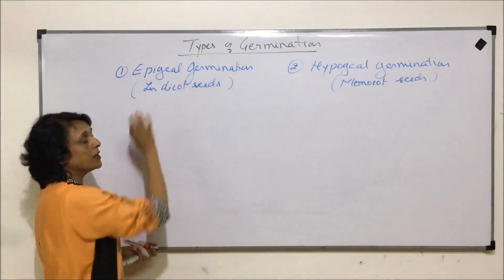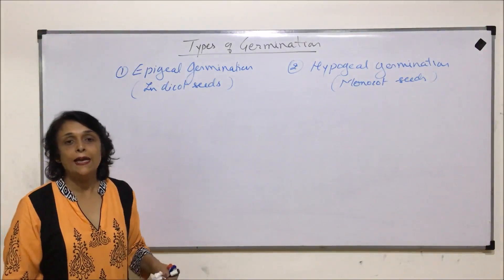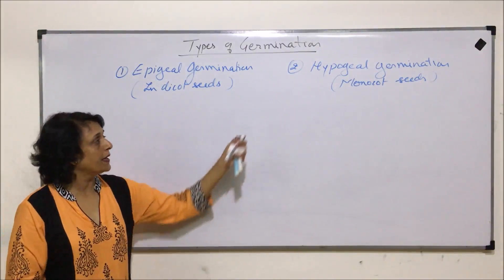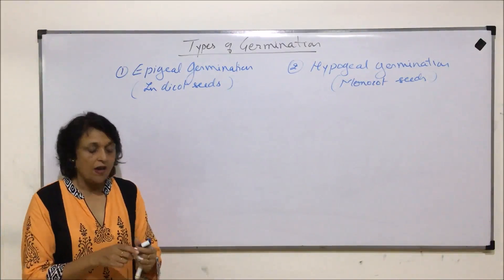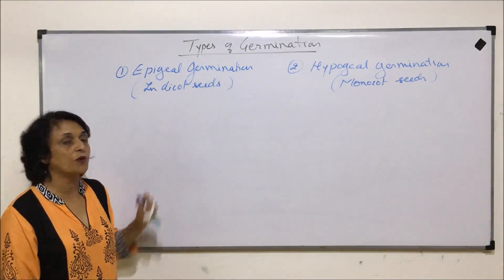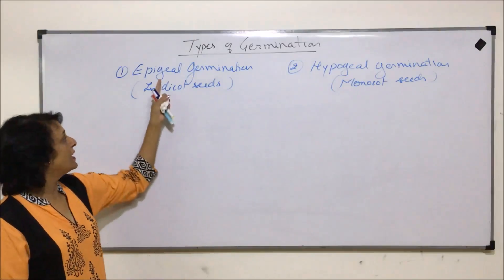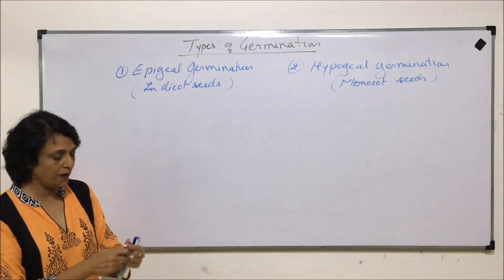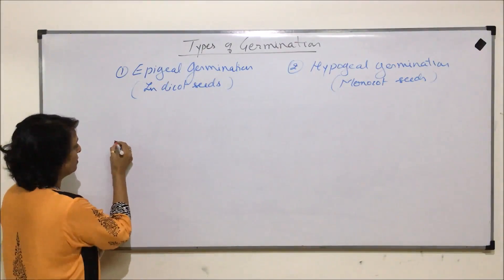The word 'geal' is related to the soil or ground. 'Epi' is above the ground and 'hypo' is below ground. Once we understand what exactly happens during this process of germination, we will understand why this term has been given to this type of germination.